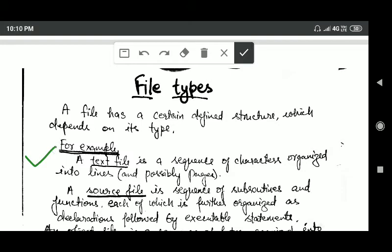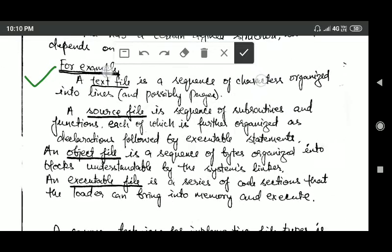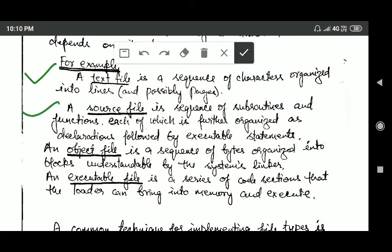For example, a text file is a sequence of characters organized into lines and possibly pages, whereas a source file is a sequence of subroutines and functions, each of which is further organized as declarations followed by executable statements.